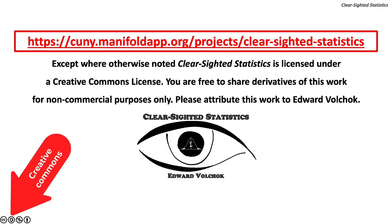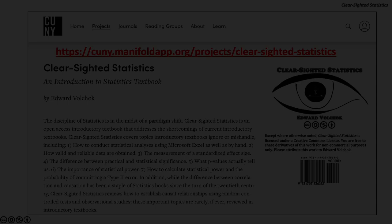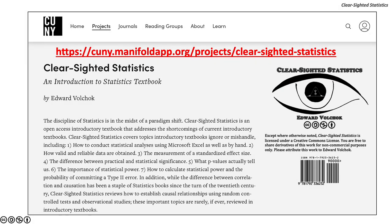Except where otherwise noted, Clear-Sighted Statistics is licensed under a Creative Commons license. You are free to share derivatives of this work for non-commercial purposes only. Please attribute this work to Edward Volchak. You can access Clear-Sighted Statistics for free, along with its Excel and PowerPoint files, on the CUNY Commons at https://cuny.manifoldapp.org/projects/clear-sighted-statistics.